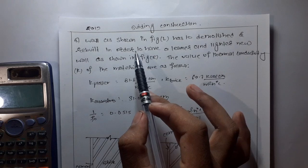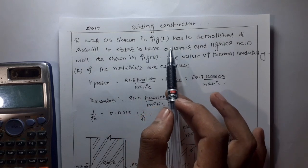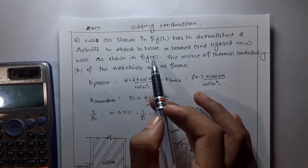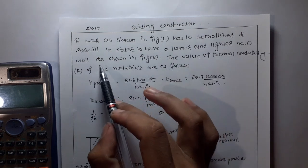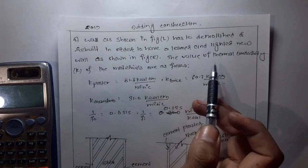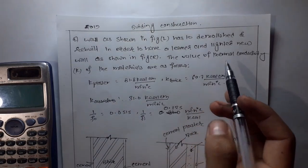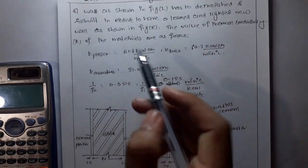The question is: a wall has to be demolished and rebuilt in order to have a lower thermal conductivity for the new wall. The values of thermal conductivity k of the materials are as below.